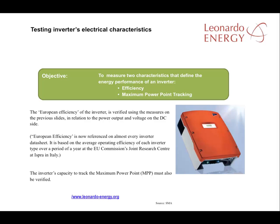The most important characteristics of an inverter are its efficiency and its maximum power point tracking. There are two measures of the efficiency of an inverter: the efficiency defined by the inverter manufacturer, and also the inverter's European efficiency, which is dependent on the inverter's load on the DC side. It's very important to verify that the inverter is working at its maximum power point, as this sets the maximum production from the modules in the PV facility.